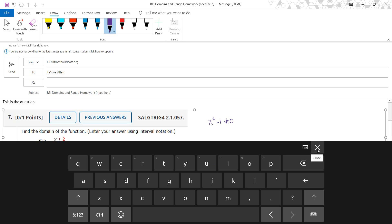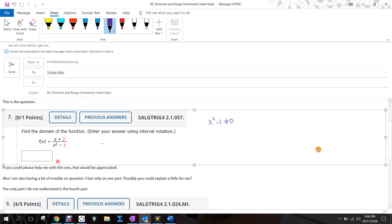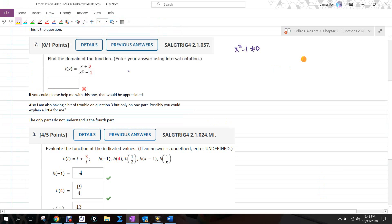So once I have this as x squared minus one cannot be zero, I'm going to still solve this like it was a normal equation. So because it's quadratic, it's going to factor to x plus one, x minus one cannot equal zero. So that says x plus one cannot equal zero and x minus one cannot equal zero. So then x cannot equal negative one and x cannot equal positive one.